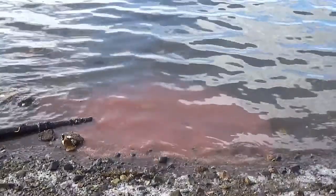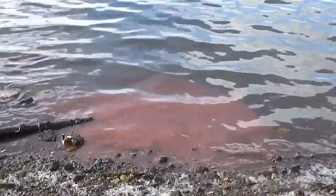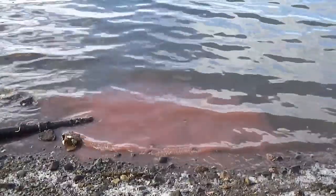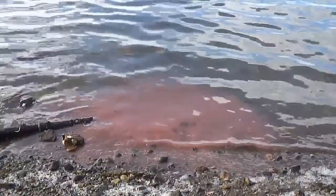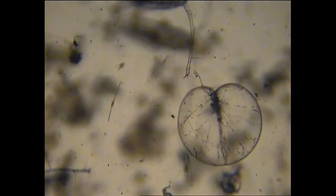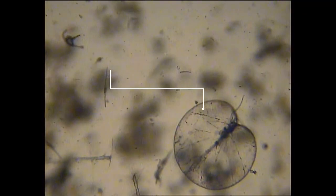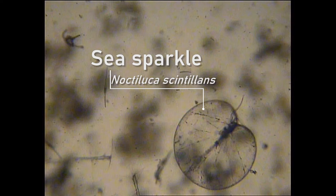A spectacular example of an algal bloom is Noctiluca or sea sparkle. The bloom is obvious during the day and can be seen as a pink to red coloring of the water. This plankton prefers water temperatures between 10 and 27 degrees Celsius. At night the bloom produces a spectacular bioluminescent glow when disturbed, as this sample in a bucket demonstrates.